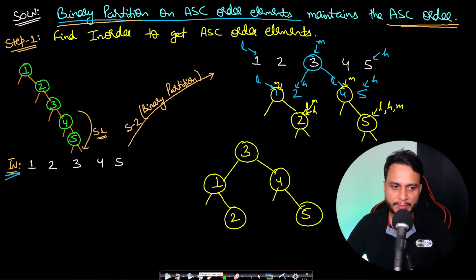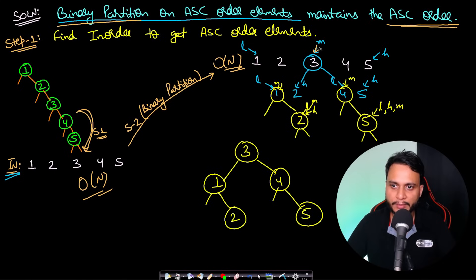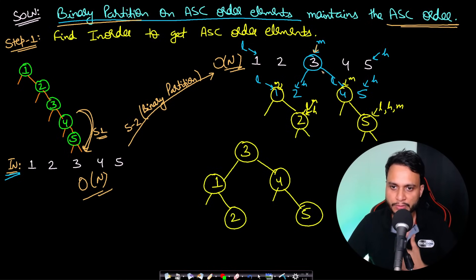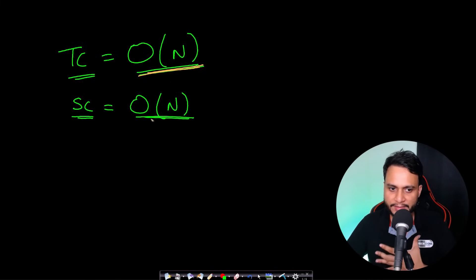Time complexity: Step 1 (in-order traversal) takes O(n). Step 2 (binary partition construction) also takes O(n) — we are not iterating through all items per level; we find mid using low and high with O(1) array random access, done n times total. So total time complexity is O(n). Since we create a new tree, space complexity is also O(n).